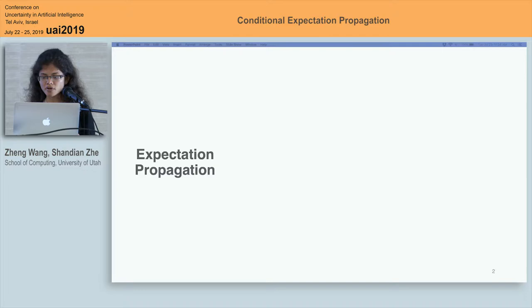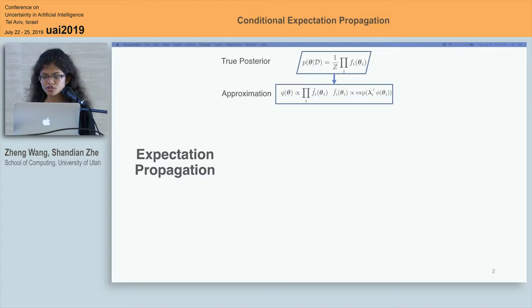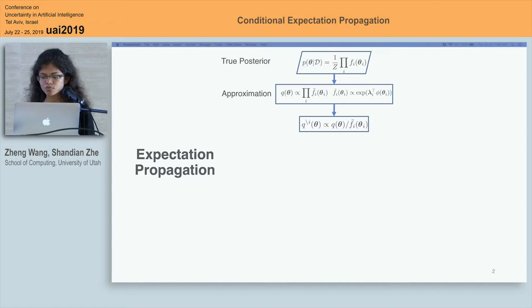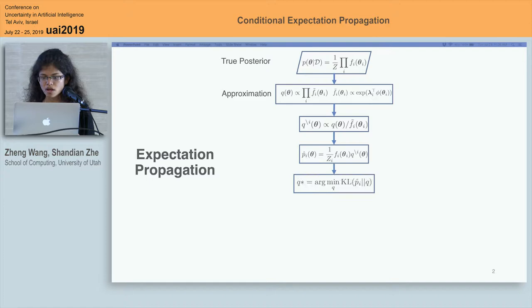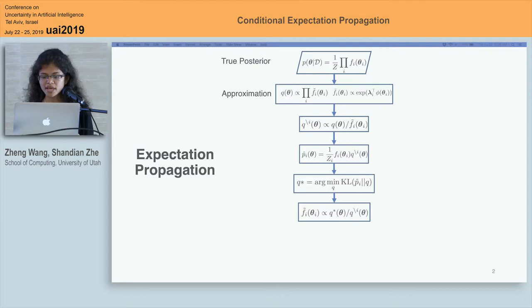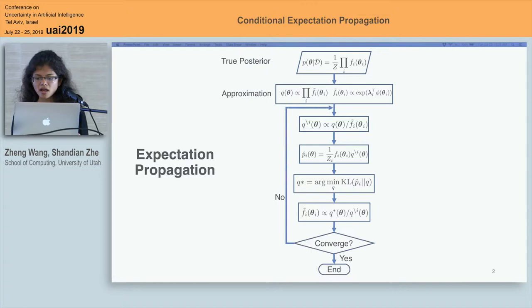Expectation propagation is a widely used approximate inference algorithm, and it uses the exponential family to approximate the true posterior distribution. Expectation propagation refines each approximate factor in an iterative way. Each time, after picking one approximate factor tilde Fi, by excluding it from the current approximation, we can get calibrating distribution Q0i, and Q0i is assumed already a good approximation to the other factors. Next, by multiplying the true factor with the calibrating distribution, we can get the tilde distribution. Then we get the optimal approximation by minimizing the KL divergence from the tilde distribution to the approximate distribution, and update the factor by removing the calibrating distribution from the optimal approximation. After this, we just switch to another factor and repeat all these procedures until convergence.